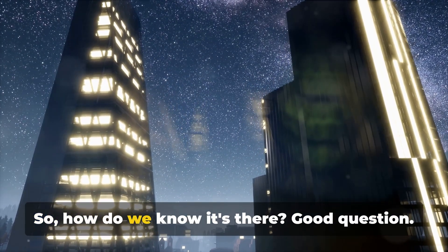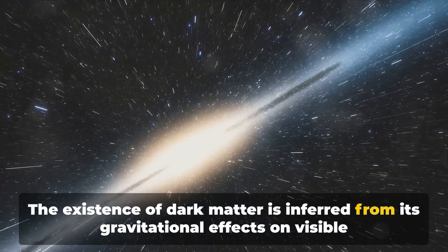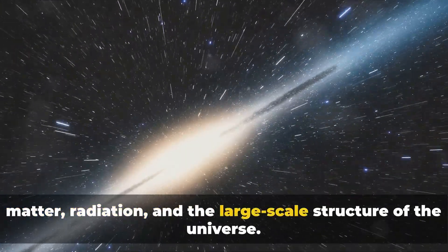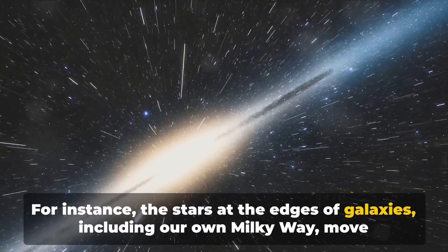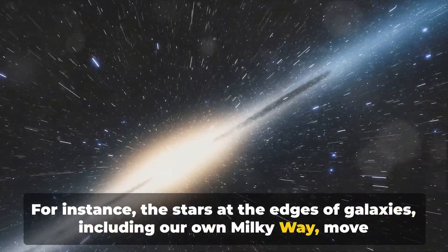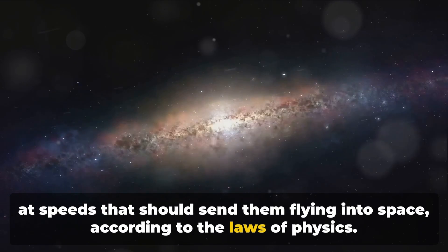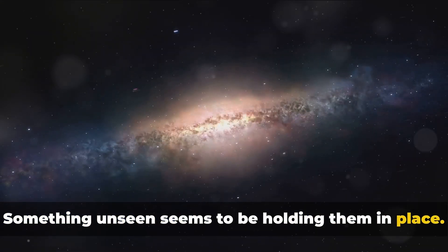So, how do we know it's there? Good question. The existence of dark matter is inferred from its gravitational effects on visible matter, radiation, and the large-scale structure of the universe. For instance, the stars at the edges of galaxies, including our own Milky Way, move at speeds that should send them flying into space, according to the laws of physics. But they don't. Something unseen seems to be holding them in place. That something is what we call dark matter.